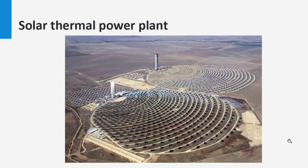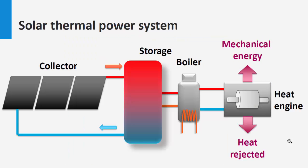This system consists basically of a collector where solar energy is absorbed, a storage system — usually water or phase-change storage — a boiler that acts as a heat exchanger between the operational fluids of the collector and the heat engine, which converts thermal energy to mechanical energy. This mechanical energy can be further used in an electrical generator.